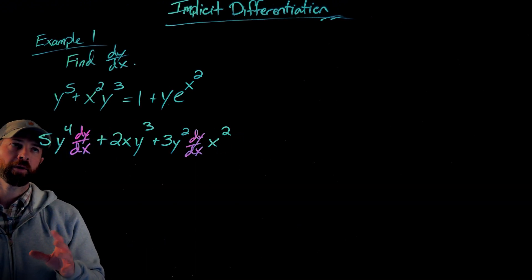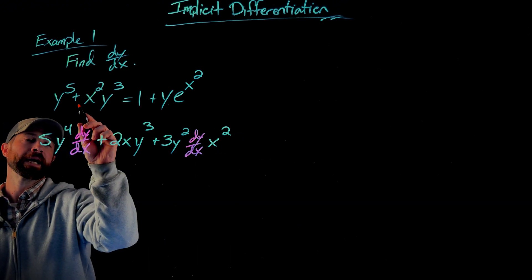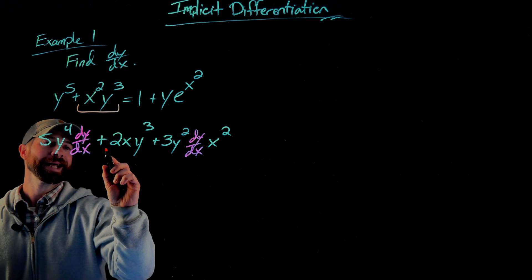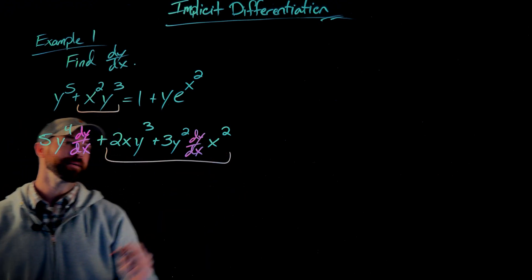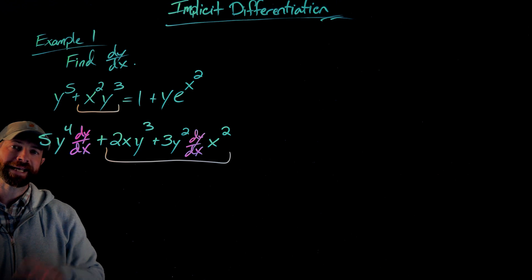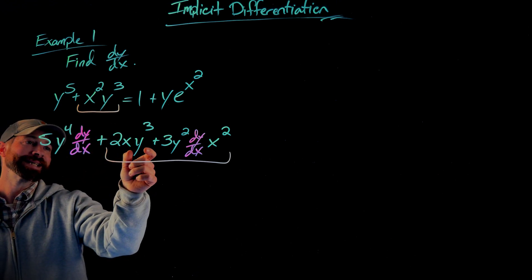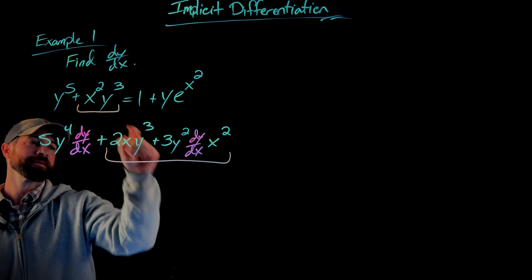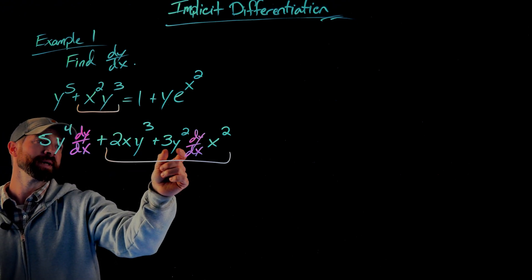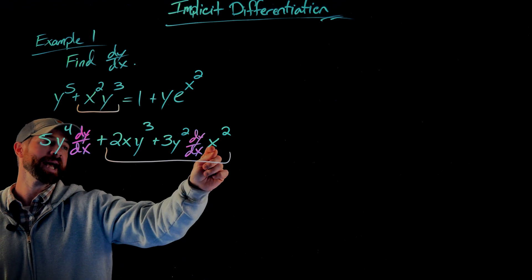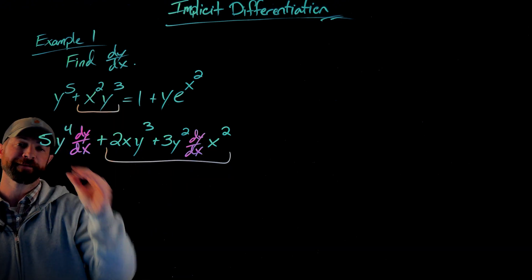Again, before we move forward, I just want to make it clear is that when we differentiated this term right there, it gave us these two terms because of the product rule. And again, how that worked is the 2x was the derivative of x squared. This y cubed was not differentiated. Then we differentiated the y cubed and got this dy/dx out. This x squared right here is just the first factor.